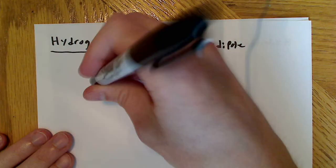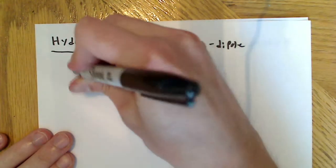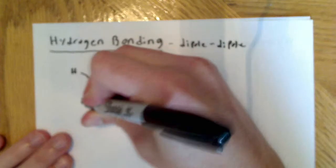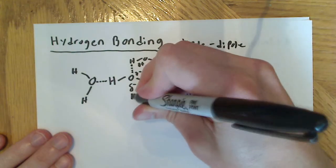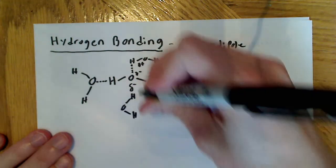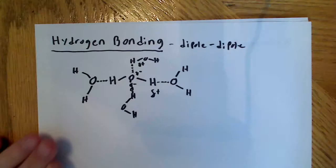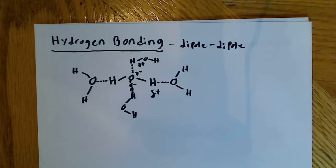And we can do that again over here. This time we'll just put the O facing here, just like that. We can do the same thing over here, and form another hydrogen bond right there. So you can form four total hydrogen bonds.